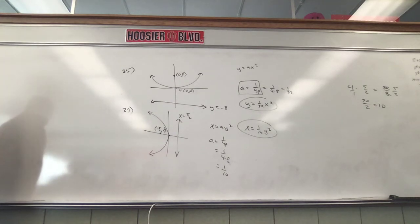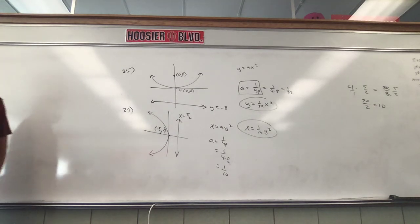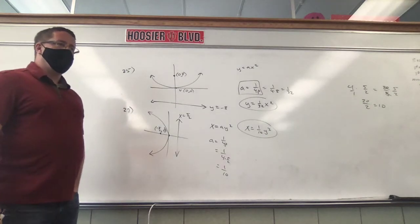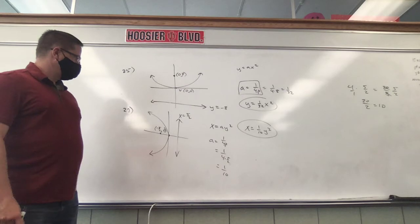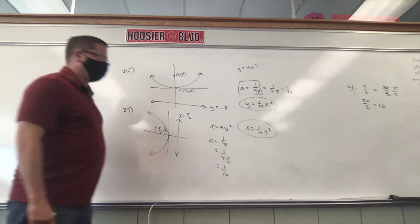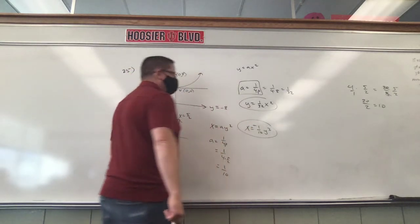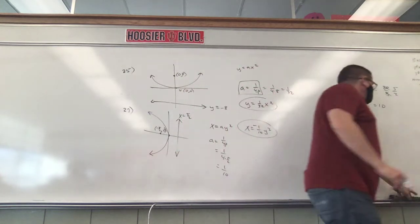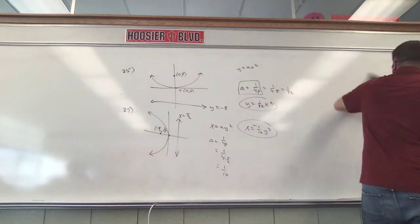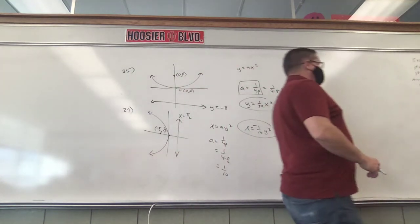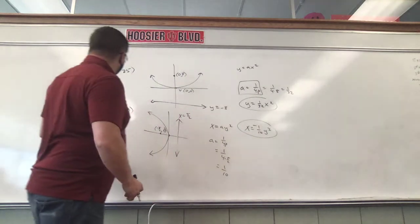What's wrong with that? It needs to be negative — because it's going left. So p tells you the amount, but it doesn't necessarily tell you the direction. Going to the left means we make it negative: x equals negative 1/10 y squared.